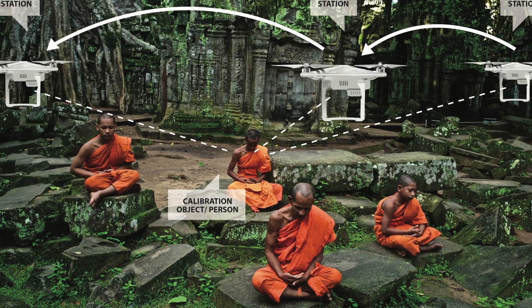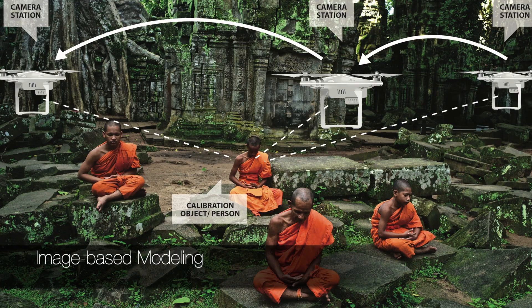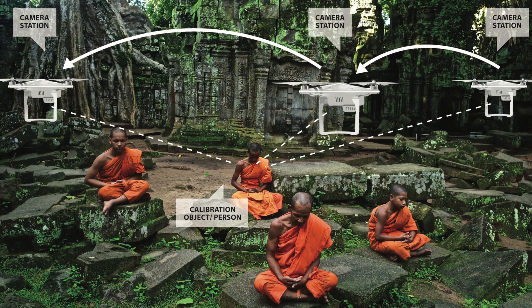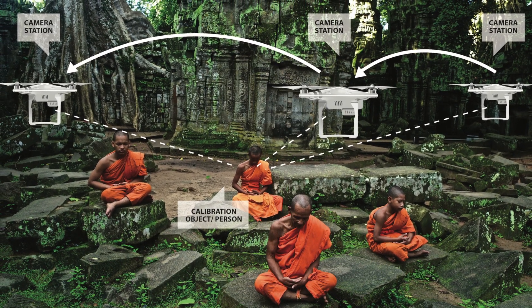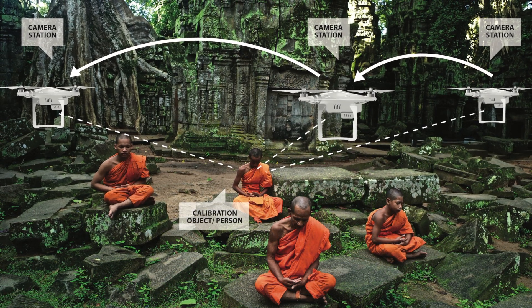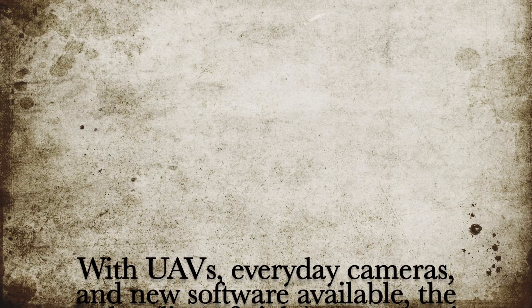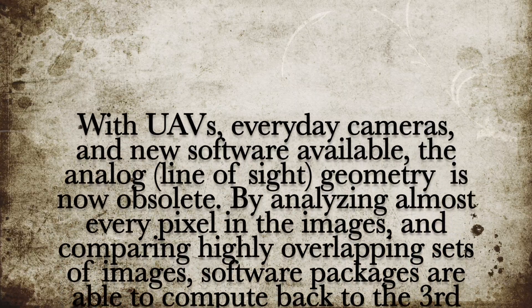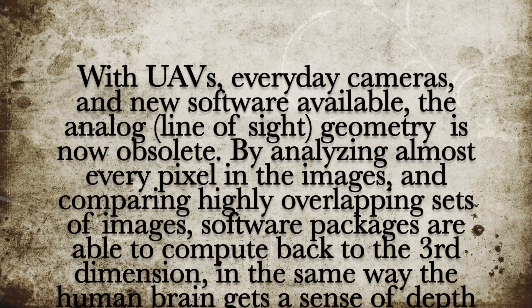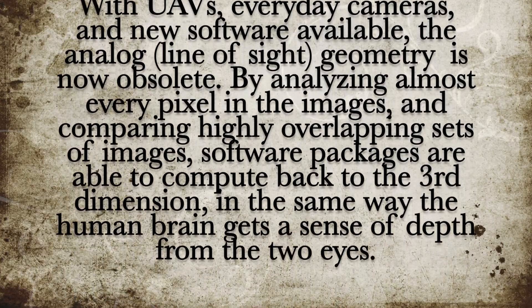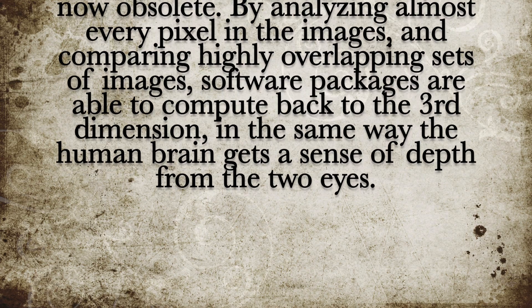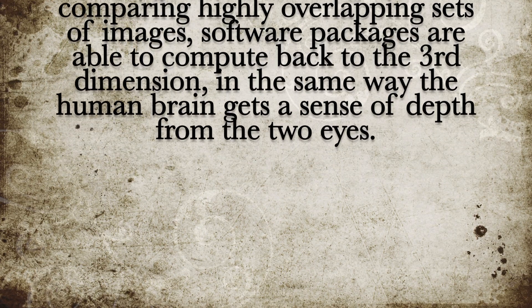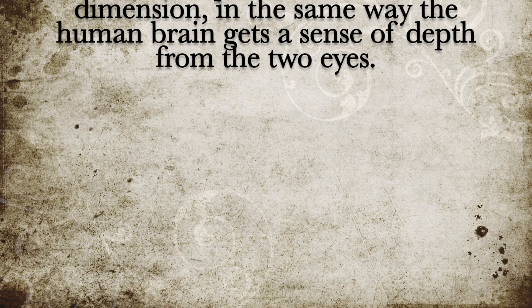Close-range photogrammetry is also referred to as image-based modeling. There used to be real differences that justified distinct naming between SPEE and aerial photogrammetry, but nowadays both techniques are 99% the same. With UAVs, everyday cameras, and new software available, the analog line-of-sight geometry is now obsolete. By analyzing almost every pixel in the images and comparing highly overlapping sets of images, software packages are able to compute back to the third dimension, in the same way the human brain gets a sense of depth from two eyes.